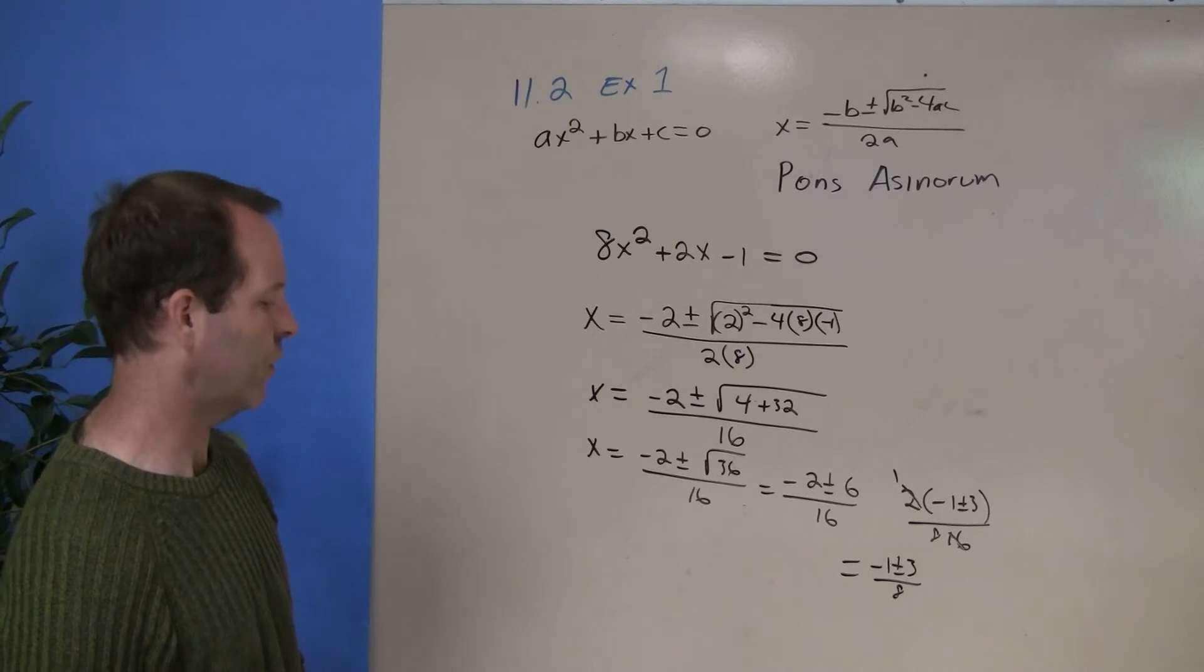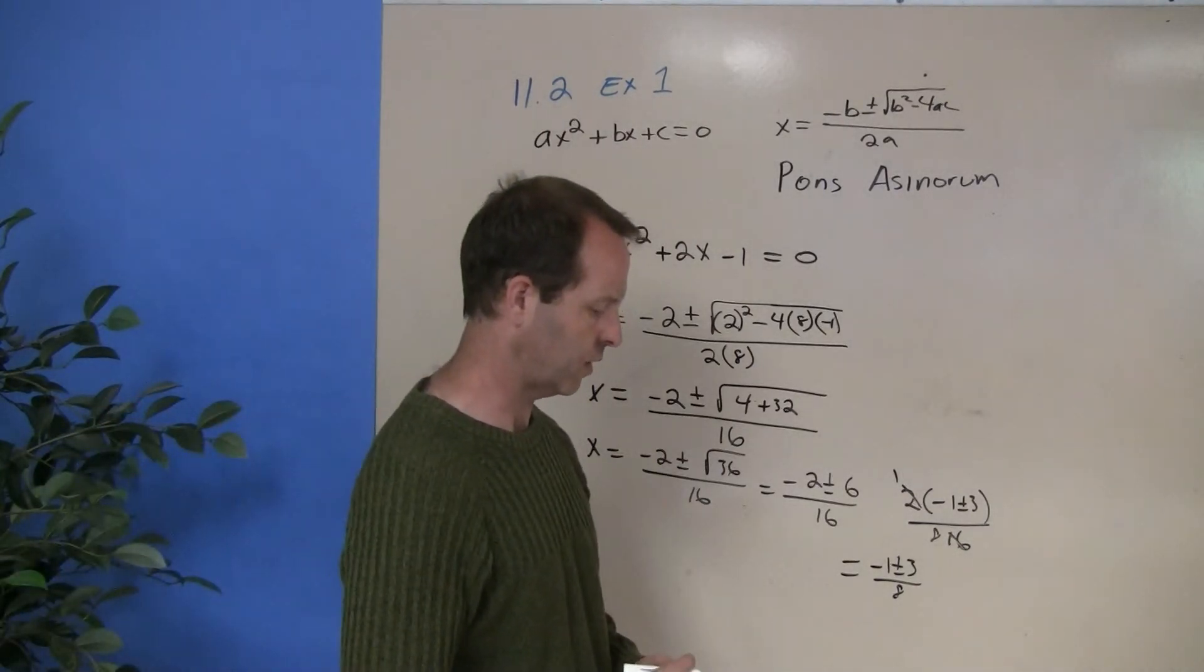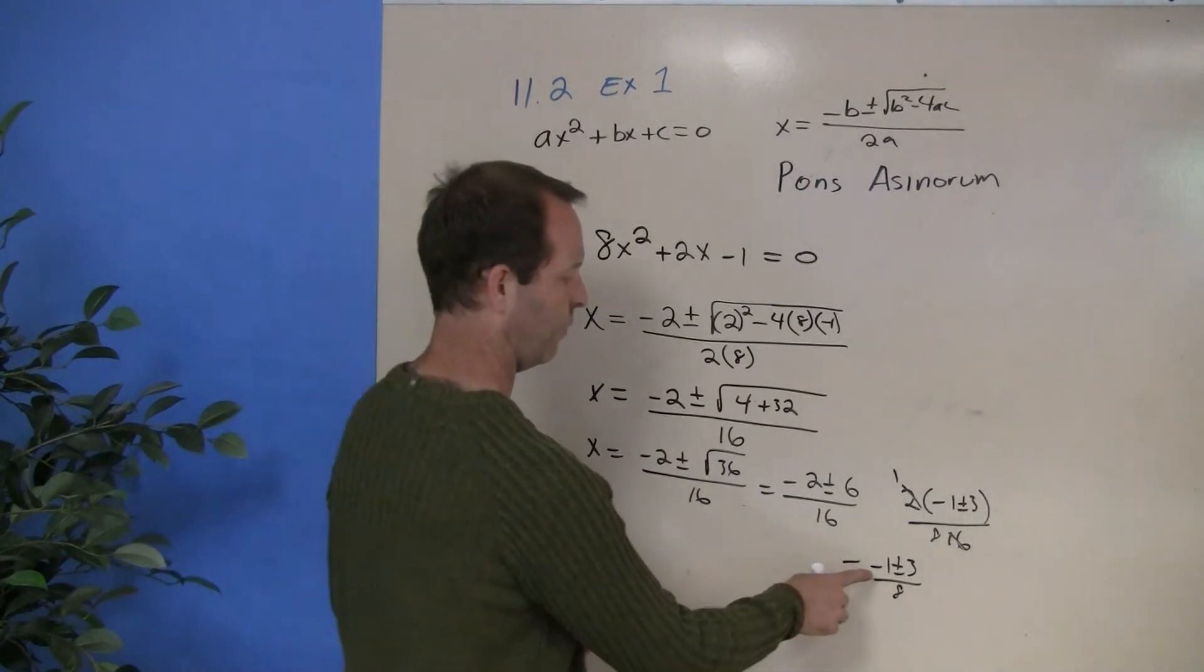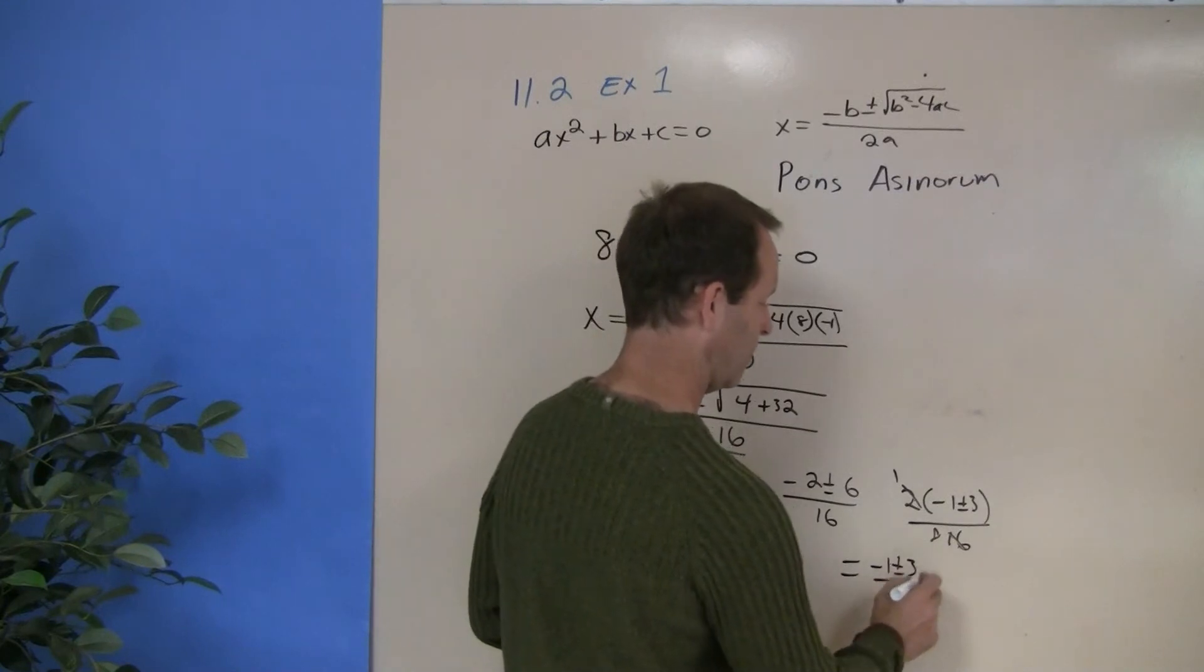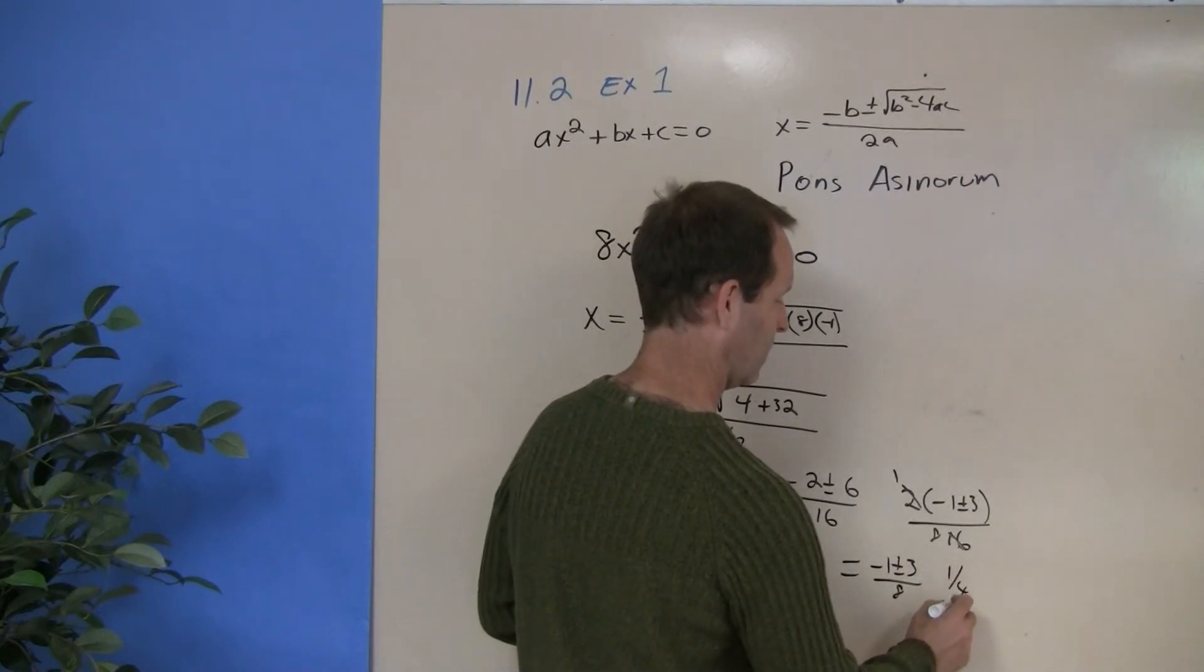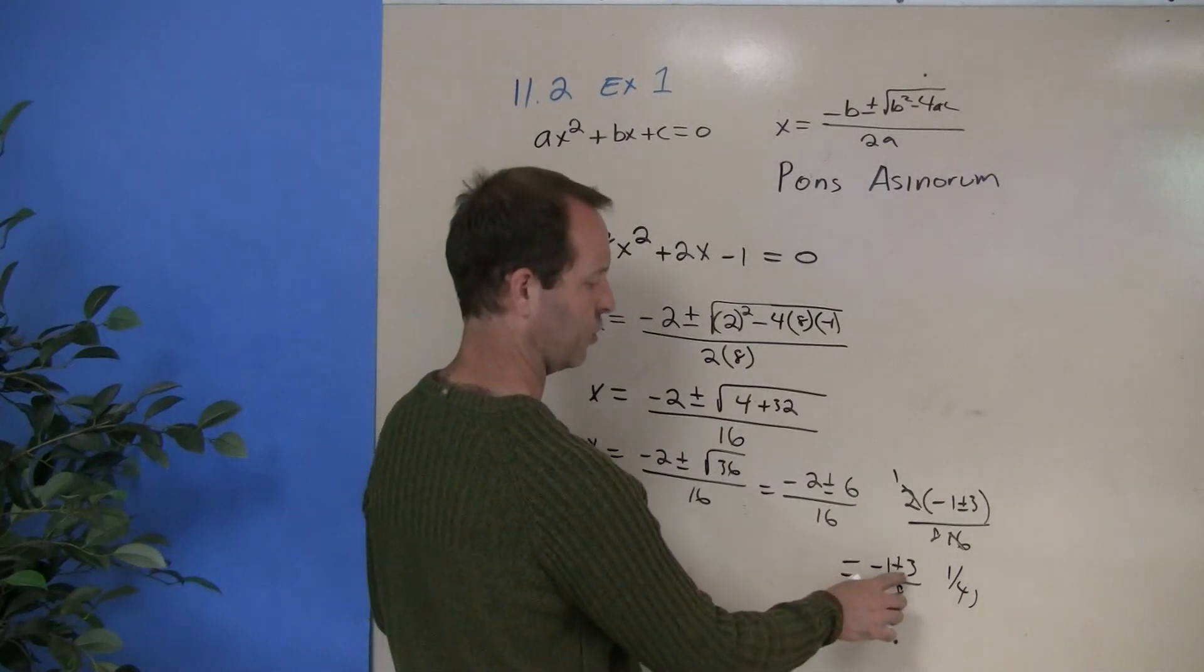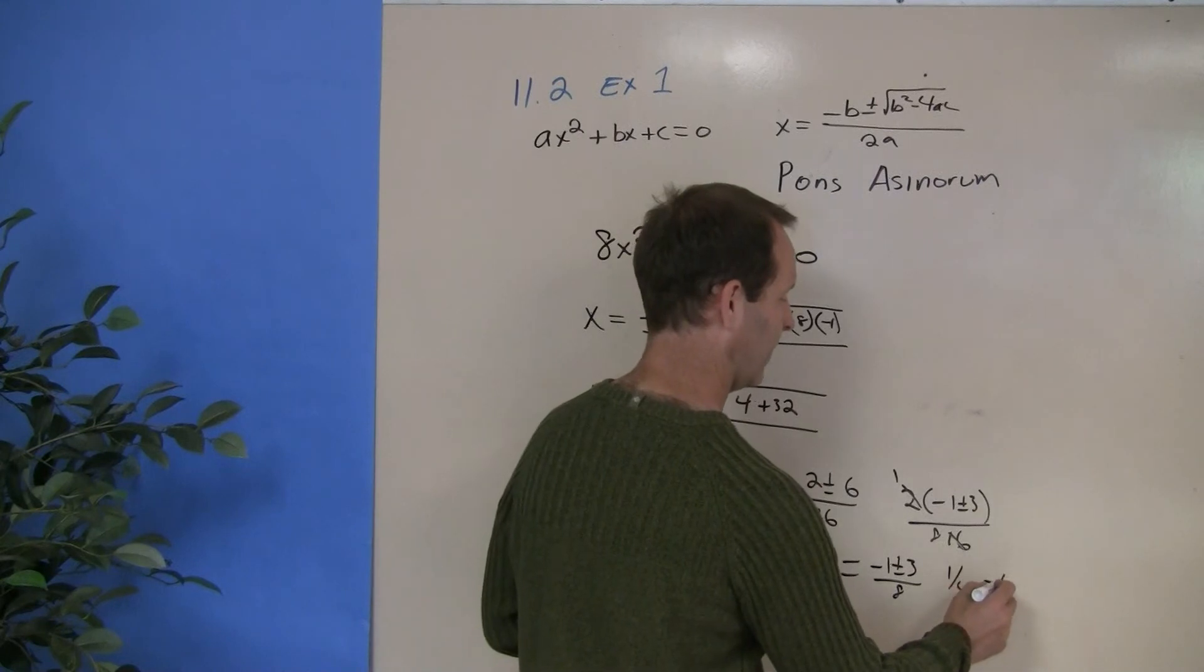And I probably should go through and try to figure out what both of those solutions are. And so negative 1 plus a 3 gives me a positive 2, and 2 over 8. So one solution is 1 fourth, and then negative 1 subtract 3, which is a negative 4, negative 4 over an 8, is a negative 1 half.